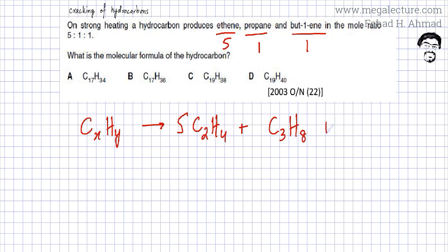So this is your propane and it's also going to produce but-1-ene which is an alkene, so it's going to be C4H8. Alkenes have the general formula CnH2n, so it's going to be C4 and H8.